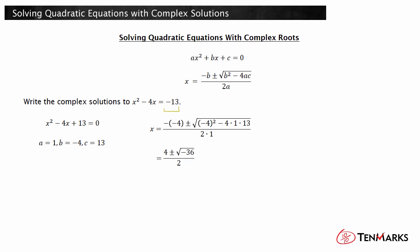As you see, there is a negative number under the square root sign. Write negative 36 as negative 1 times 36.